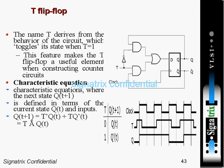The characteristic equation defines the next state Q(t+1) in terms of current state and input. The next state is: Q(t+1) = T̄·Q(t) + T·Q̄(t), which is equivalent to T XOR Q(t). This is an XOR operation.